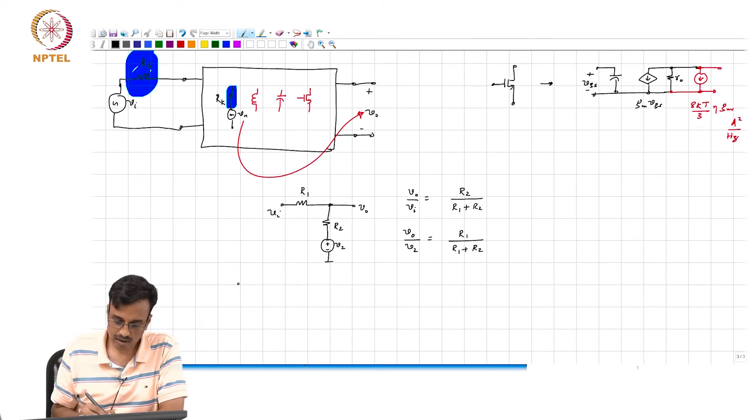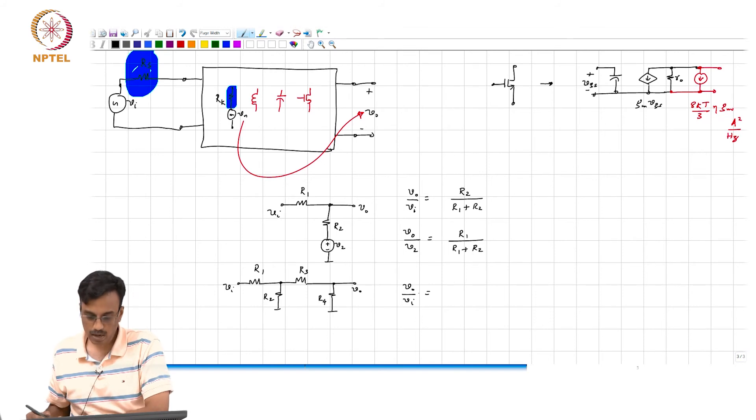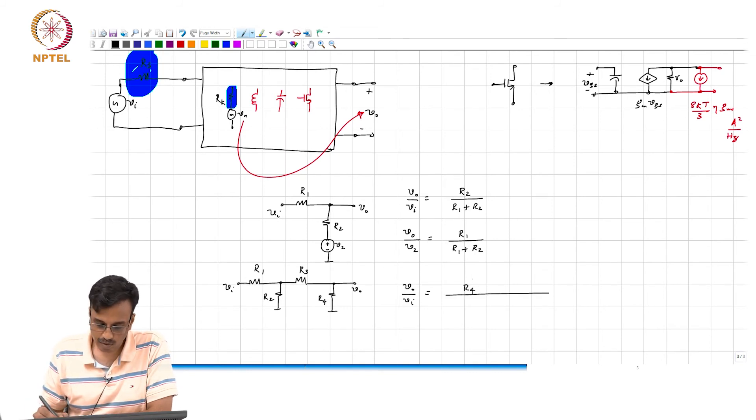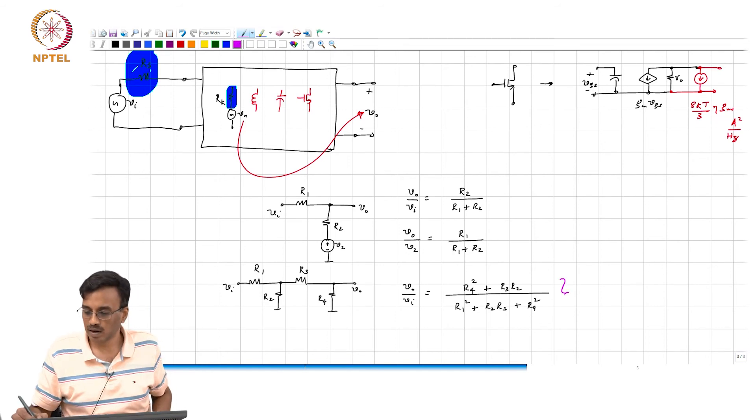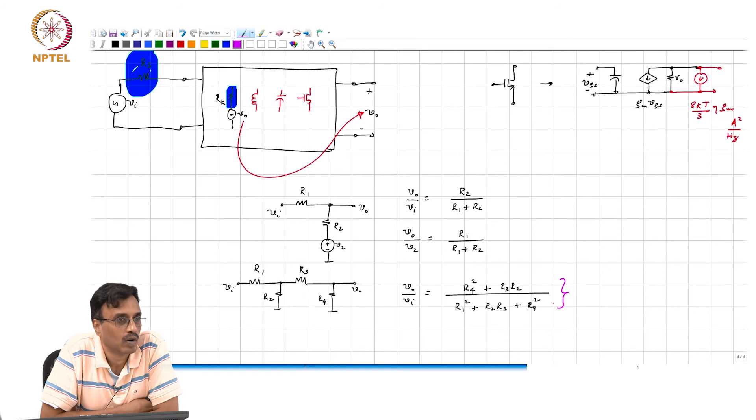And now, let us say somebody gave you a more complicated network: R1, R2, R3, R4. And you went and calculated Vo by Vi, and that turned out to be, let us say you calculated it and it turned out to be, you got some answer of the form R4 square plus R3 R2 divided by R1 square plus R2 R3 plus R4 square. Can you comment on the correctness or the lack of it of this result? Do you think it is correct or wrong?